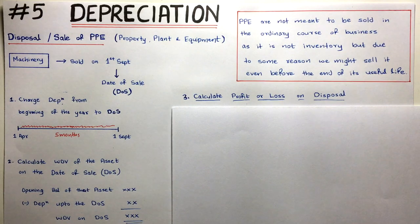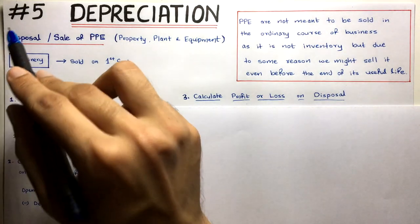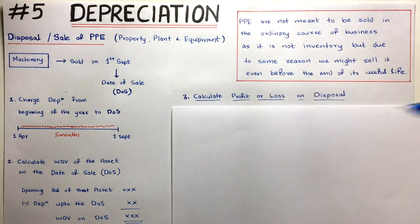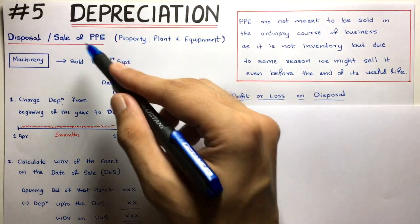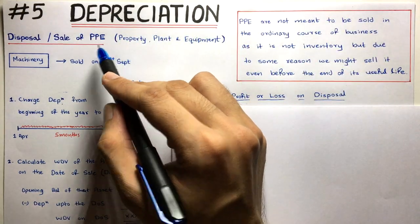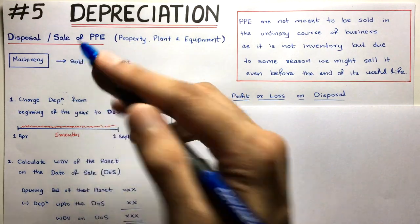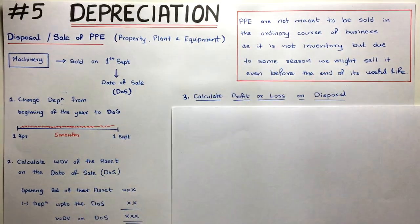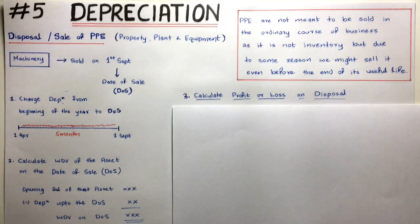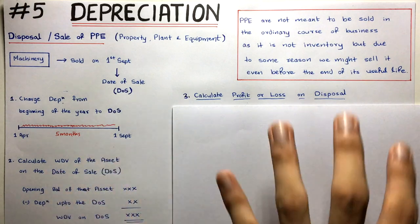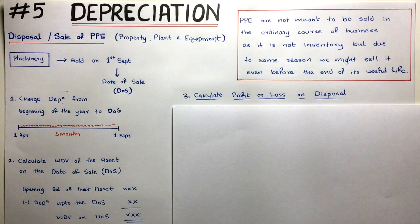Welcome back to Sahab Academy. In this fifth video of the depreciation chapter, we are going to understand the procedure that we have to follow in accounting when we sell our tangible fixed asset — technically called property, plant, or equipment (PPE) — when we dispose of it. Let's begin by understanding the concept first, and then move on to the accounting procedures, calculations, and treatment.